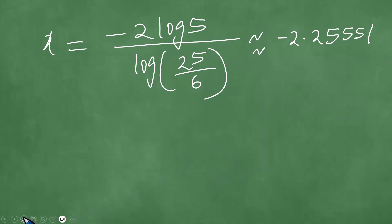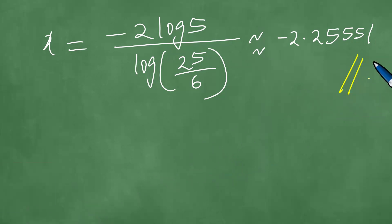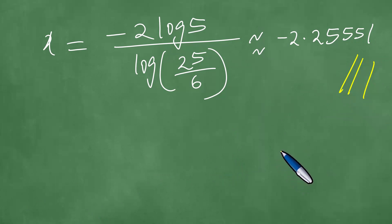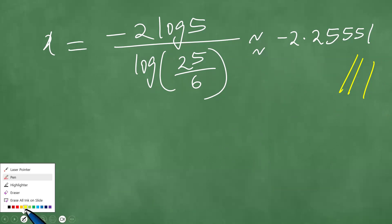Using a calculator gives us approximately minus 2.255. This is the answer to the problem. However, this is not the only way to solve it — there are many other approaches. Let's look at method two.